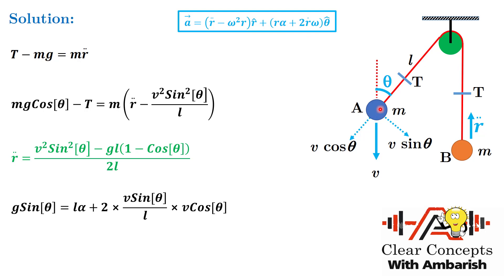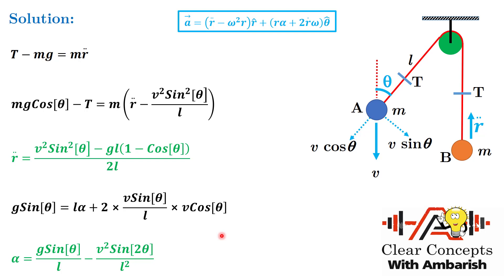With r = l (the string length from pulley to A), the equation becomes: l alpha + 2 times v cos theta times (v sin theta / l) = g sin theta. Rearranging: l alpha + 2v squared sin theta cos theta / l = g sin theta. So alpha = g sin theta / l minus v squared sin 2theta / l squared, since 2 sin theta cos theta = sin 2theta.